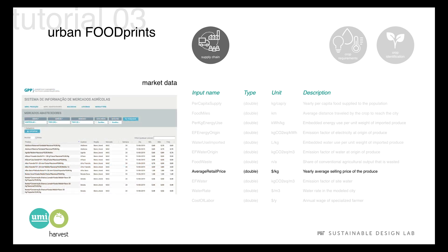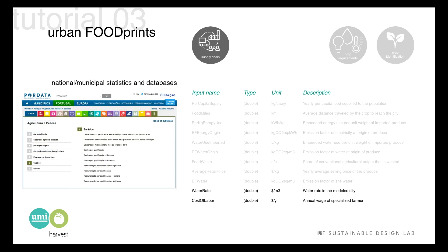Average retail price of crops vary throughout the year. You can either try to find reliable market data for your city or make assumptions based on prices in the main local stores. Finally, you will find wages of specialized farmers in your country's statistical reports and water rates on the website of your local water utility.